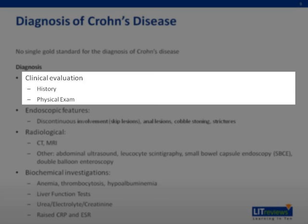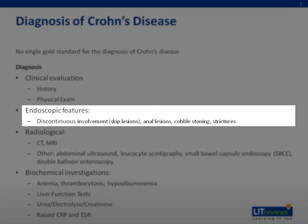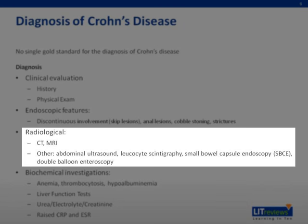A general physical examination should be performed, looking out for abdominal tenderness or distension, palpable masses, perineal or oral inspection, and rectal digital examination. Measurement of body weight and BMI are recommended. Endoscopic features to look for include discontinuous involvement or skip lesions, anal lesions, cobblestone appearance, and strictures. Multiple biopsies — at least two from five sites around the colon, including the rectum and ileum — should be obtained for proper diagnosis.